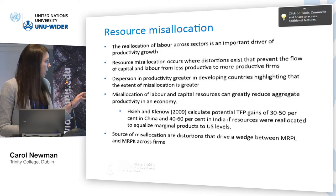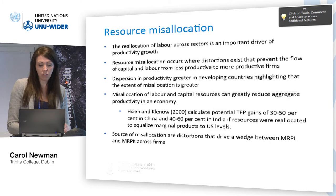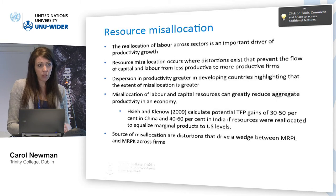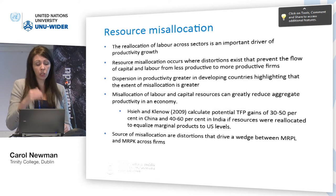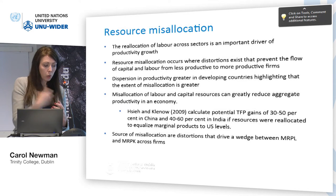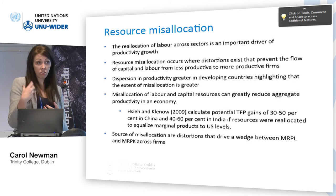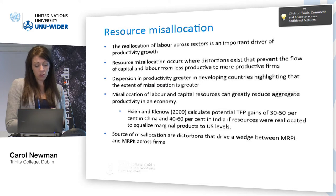Seminal work on this from 2009 by Hsieh and Klenow looked at the potential TFP gains for China and India if resources were reallocated as efficiently as in the US — the gains were in the region of 30 to 60%. Our early work from South Africa is pointing to similar potential gains in TFP if resources are reallocated to their optimal level. On the one hand, if you're developing policies to favor particular types of firms or to push for exporting, you also have to be very careful not to create or introduce distortions that can prevent the efficient reallocation of labor and capital across firms.